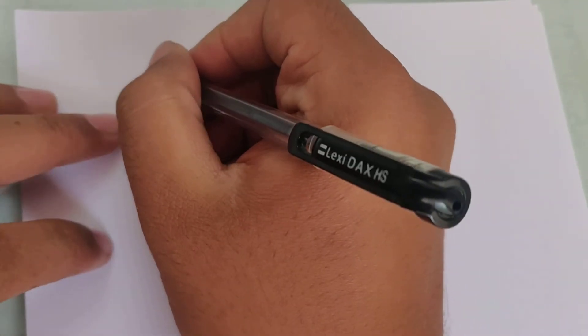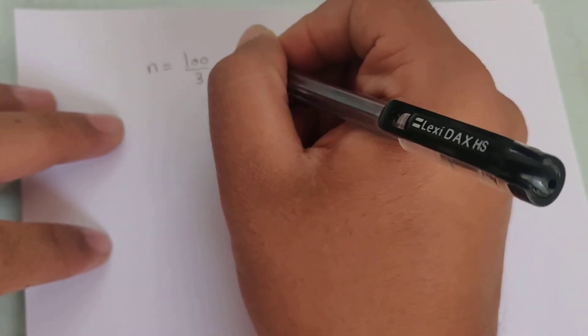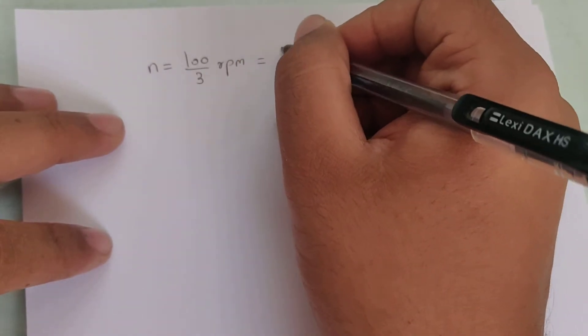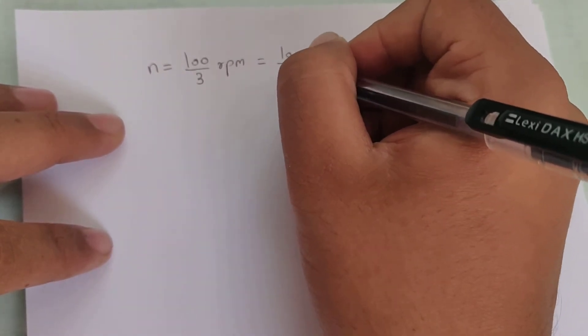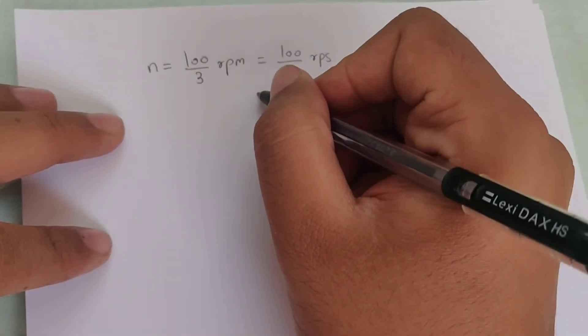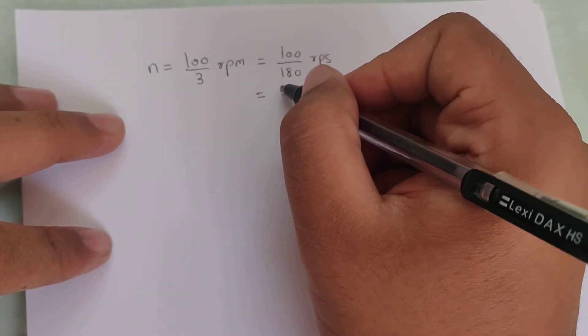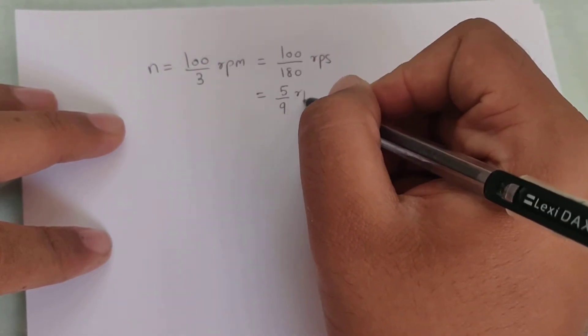The next question is a long playing record revolves with the speed 100 by 3 rpm. I would call it as n. To convert that into rps, I'll divide this by 60 which makes it 100 by 180 rps, reducing it down we get it as 5 by 9 rps.